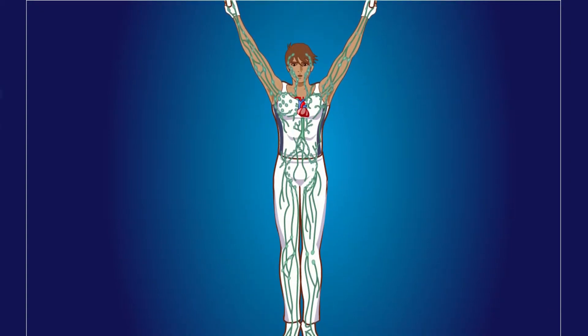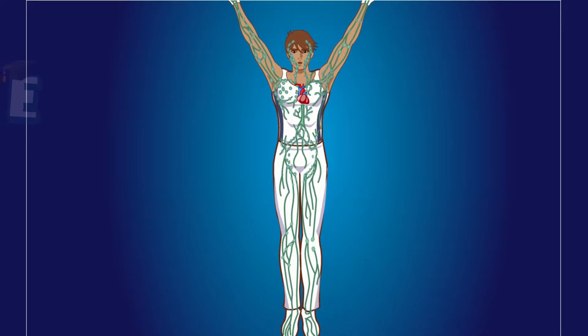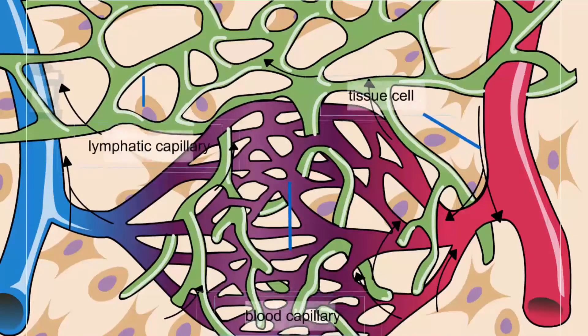Lymph flows within the human body through the network of lymphatic capillaries. Lymphatic capillaries have bigger size and they are more irregular than blood capillaries.